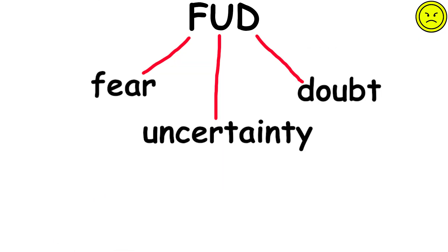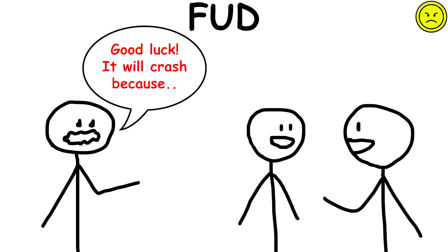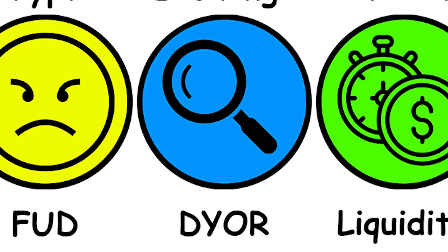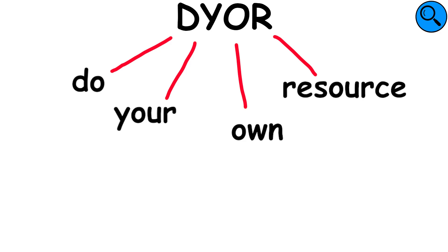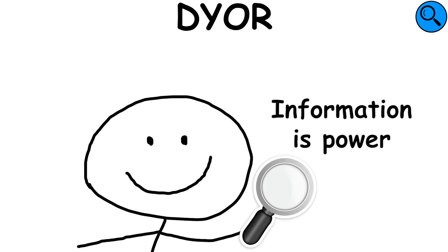FUD: fear, uncertainty, and doubt is a strategy that aims to negatively influence people's perception by spreading negative, dubious, or false information and consequently triggering fear and sales. DYOR: do your own research — it is a sort of mantra in the crypto sector and in general regarding information.